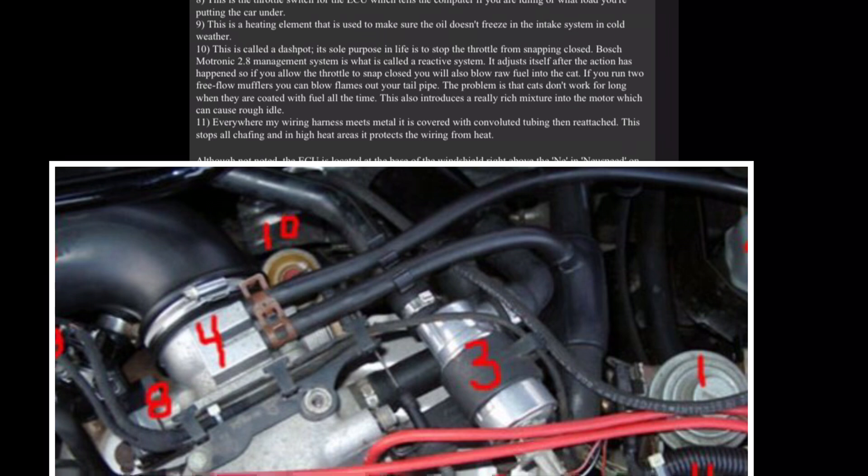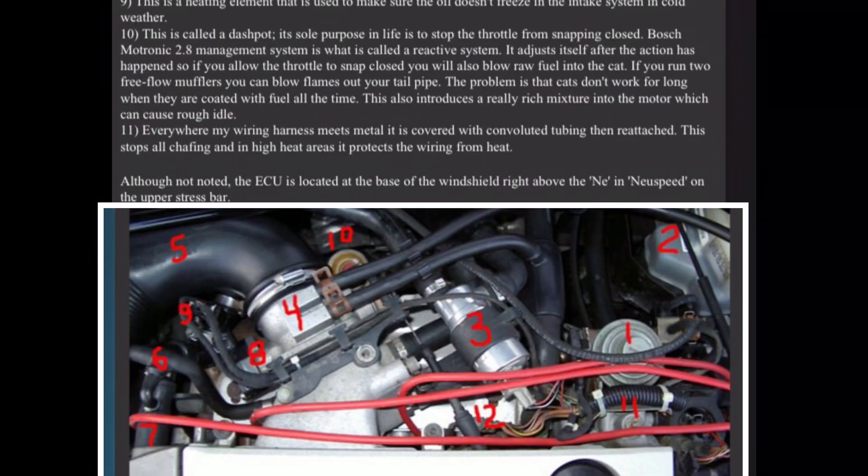Ten, this is called a dash pot. Its sole purpose in life is to stop the throttle from snapping closed. Bosch Motronic 2.8 management system is what is called a reactive system. It adjusts itself after the action has happened, so if you allow the throttle to snap closed you will also blow raw fuel into the cat. If you run two free flow mufflers you can blow flames out your tailpipe. The problem is that cats don't work for long when they are coated with fuel all the time. This also introduces a really rich mixture into the motor which can cause rough idle.